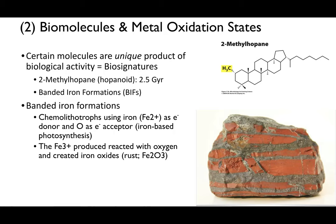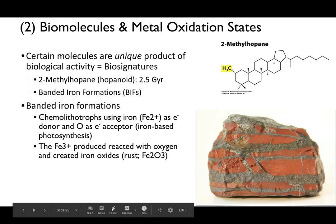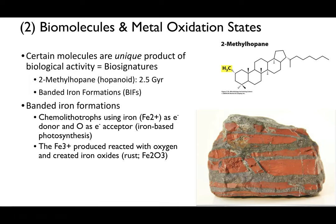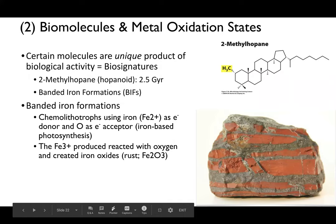Another line of evidence is banded iron formations. A group of bacteria called chemolithotrophs use iron as an electron donor and oxygen as an electron acceptor—essentially iron-based photosynthesis. As they produce oxygen, iron-2 is converted to iron-3, which reacts with oxygen to create iron oxides—Fe2O3, or rust. These red beds of banded iron formation, visible as deep red lines in sediment, can be found about a billion years ago all over the world, including at Devil's Tower National Monument in Wyoming.